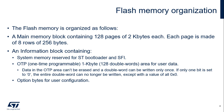The flash memory contains 128 pages of 2 kilobytes each. Each page is made of 8 rows of 256 bytes. Next to the main memory block, there is an information block which contains three parts. The first part is the system memory, which is reserved for the STMicroelectronics bootloader. When selected, the device boots in system memory to execute the bootloader.